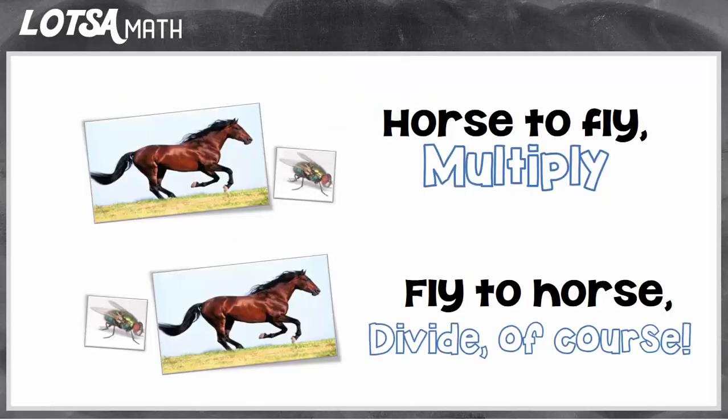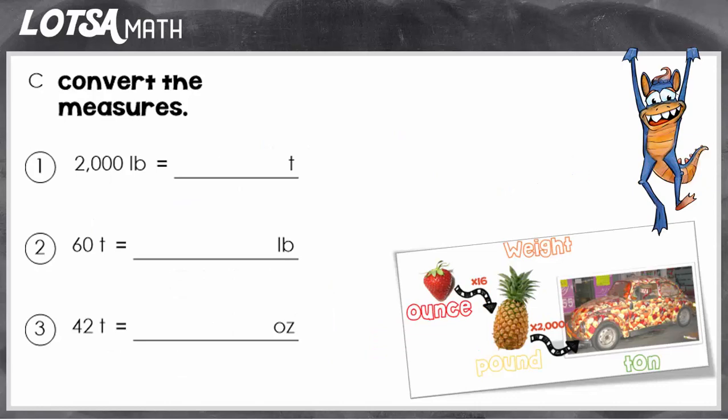So when you go to convert them, you're going to use the same strategy that you've been doing for all the other ones. Horse to fly, multiply, or fly to horse, divide of course. And so when you're going from bigger units like tons to smaller units like ounces, you're going to multiply. But if you're going from smaller units like a pound to a bigger unit like a ton, you would divide. So let's do some examples.